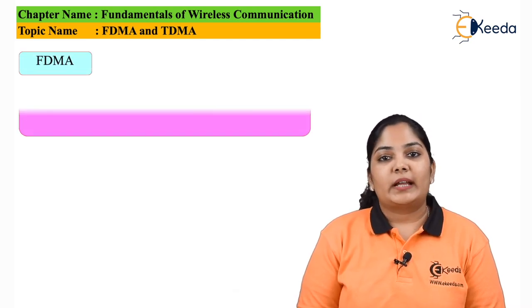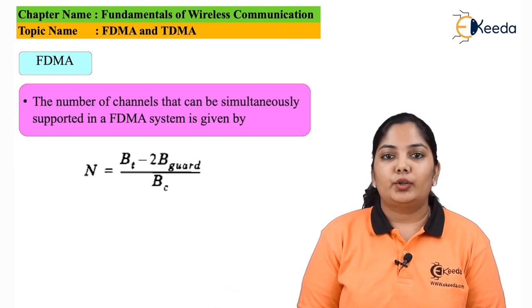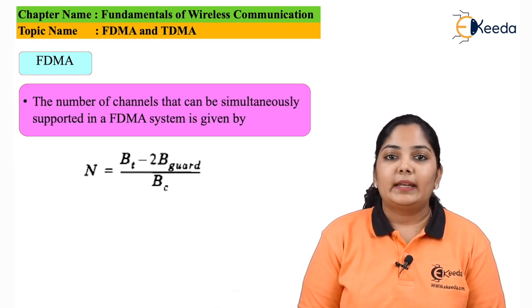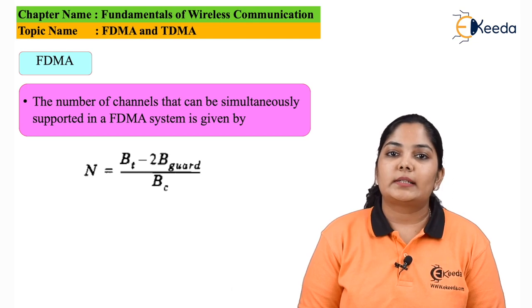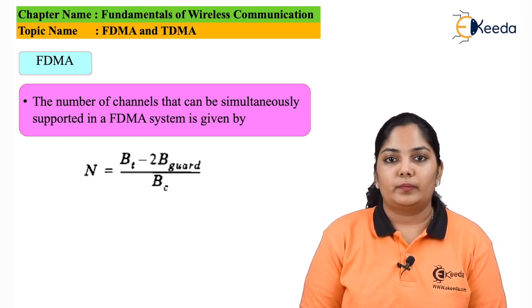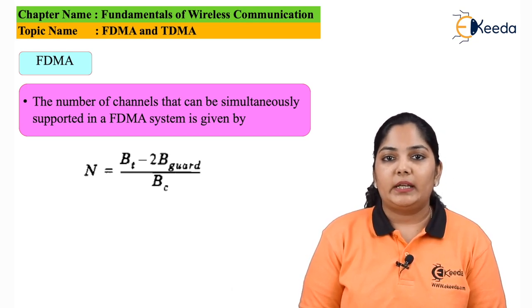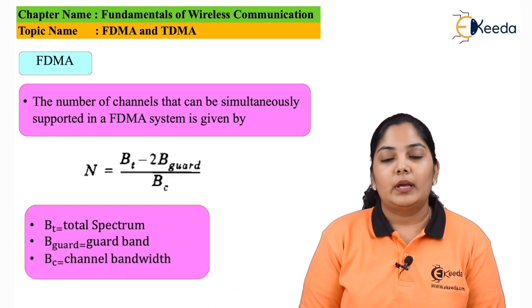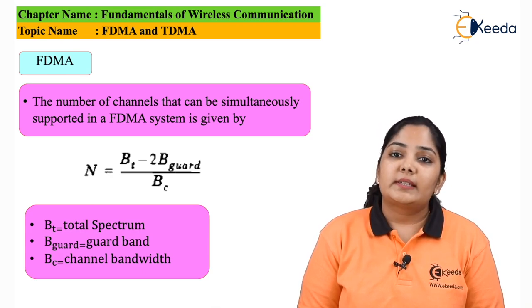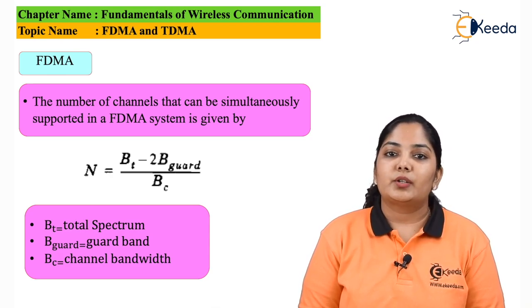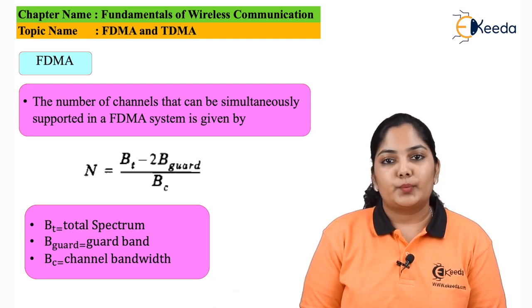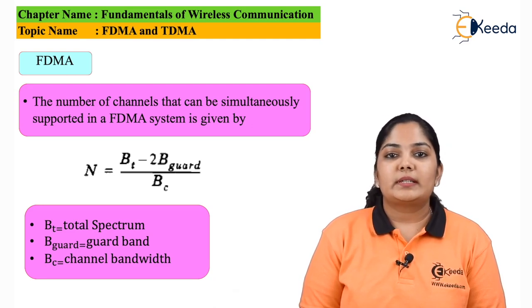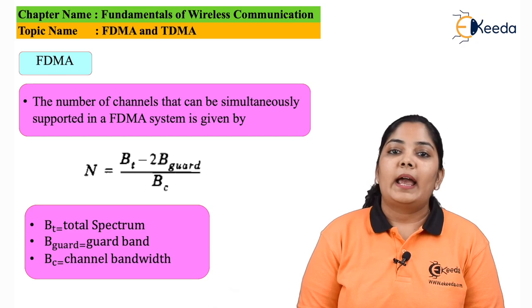The total number of channels in FDMA is calculated as follows: N, the total number of channels, equals Bt (total bandwidth) minus two times the guard band, divided by Bc (the single channel bandwidth). Guard bands are required on both sides of the channel so that adjacent channel interference does not occur.